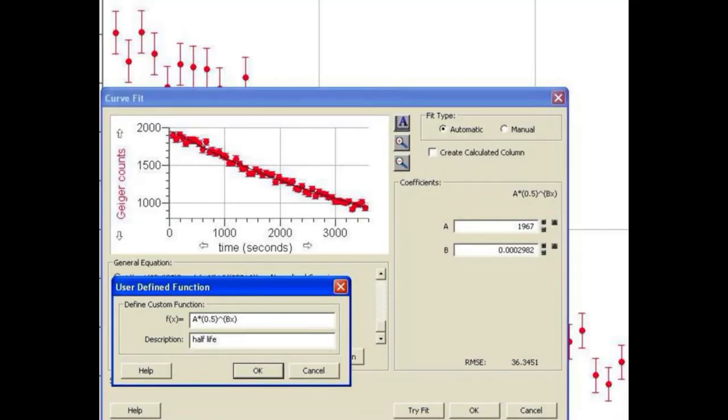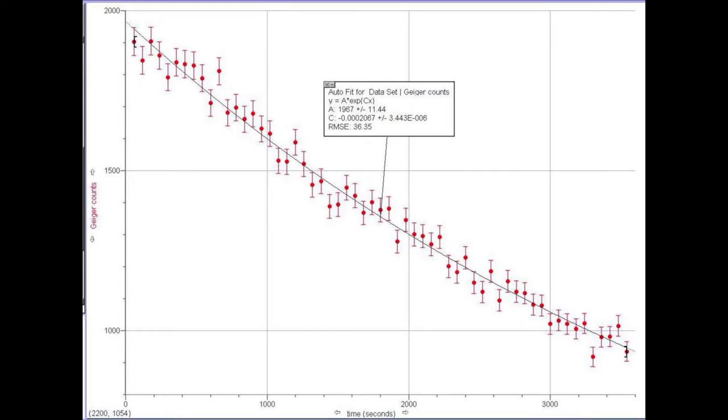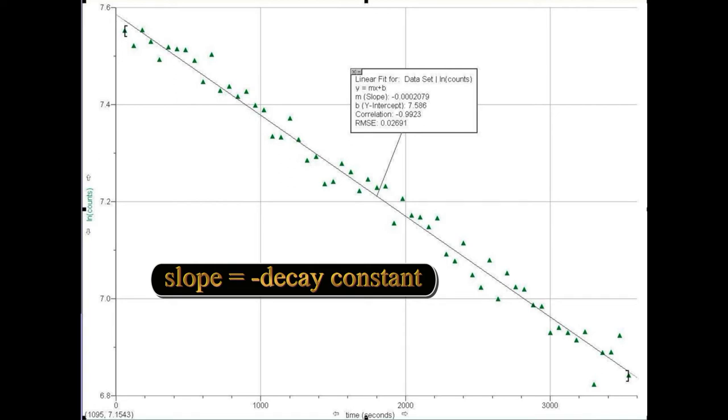We can also fit an exponential function to determine the decay constant. This time we fit the function a times e to the cx, where c is the negative of lambda. A plot of log n, or log count rate, versus time, will yield a straight line with a slope of minus lambda.